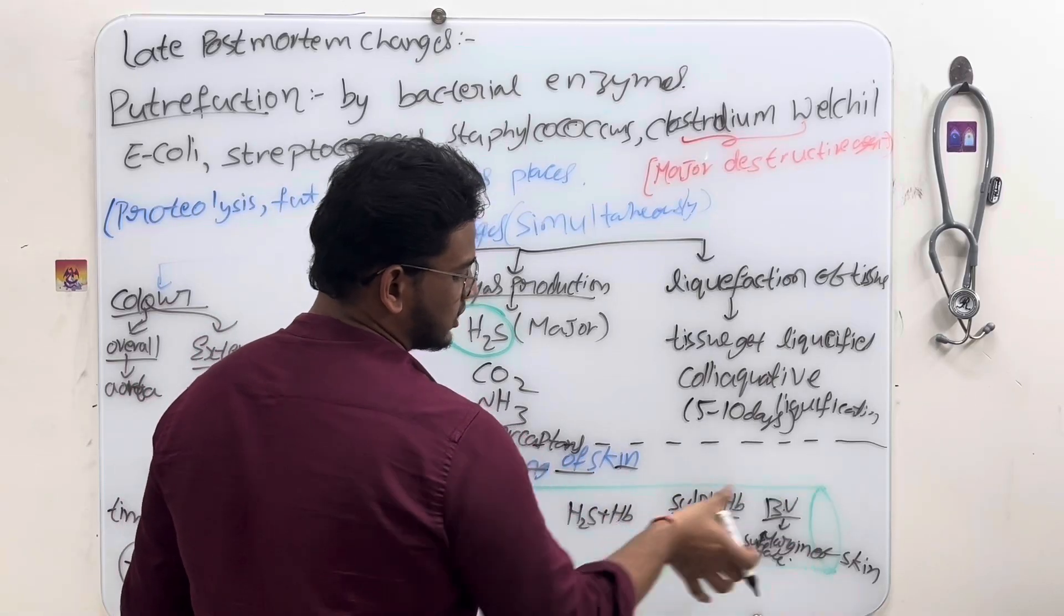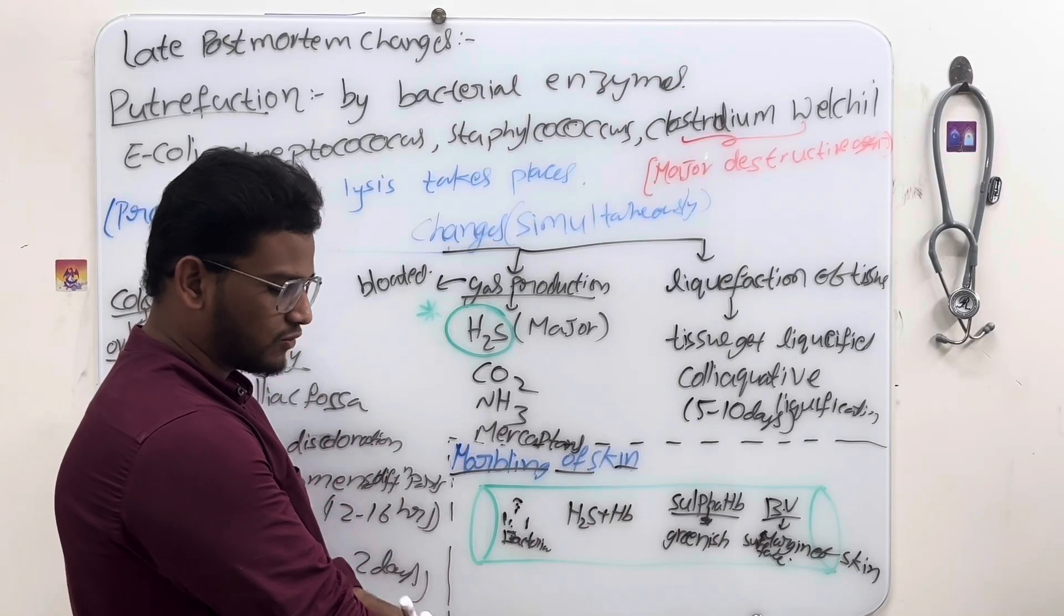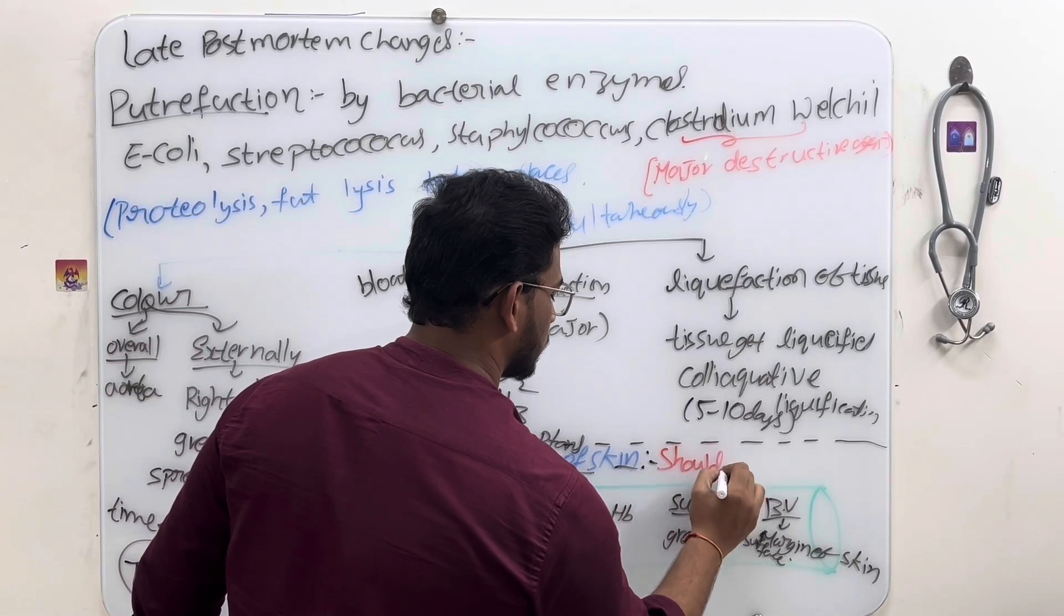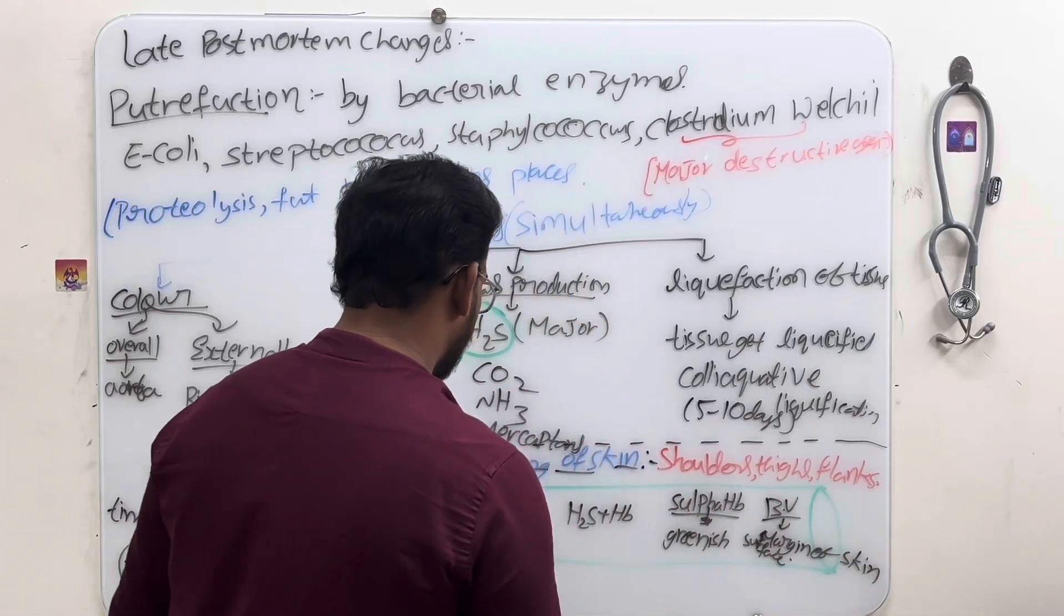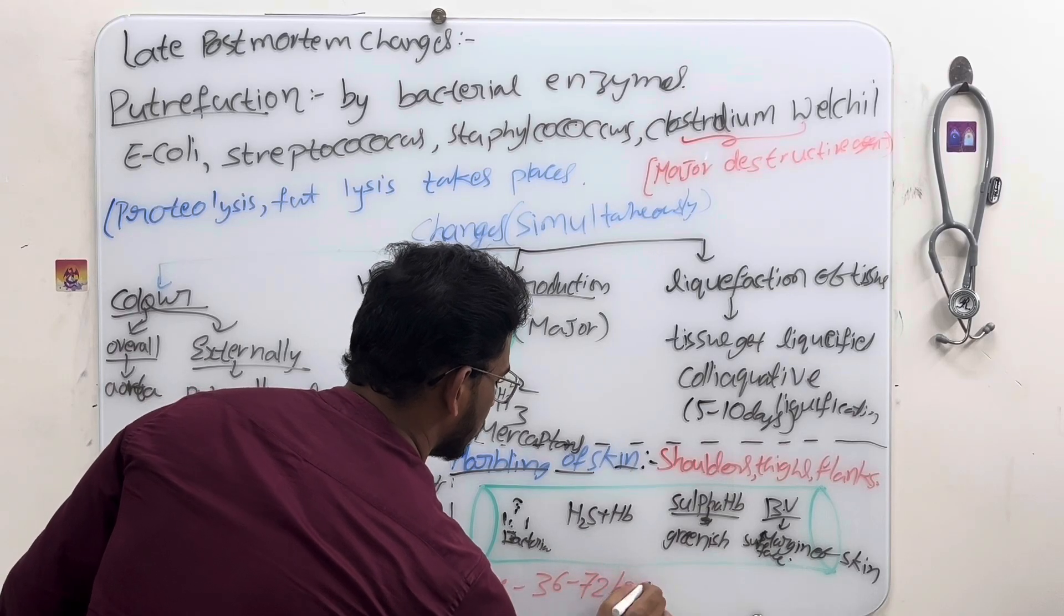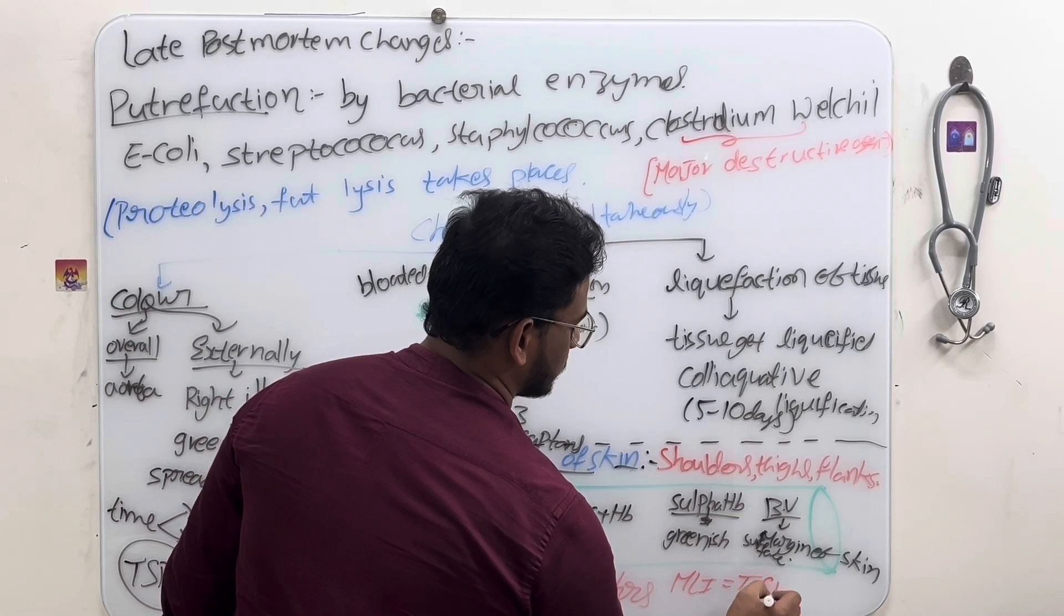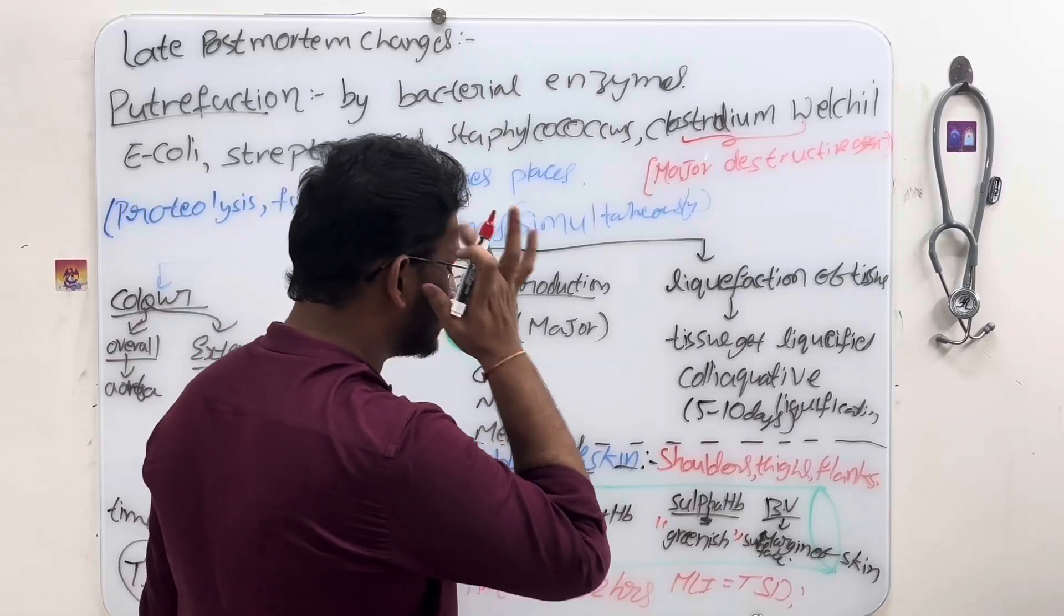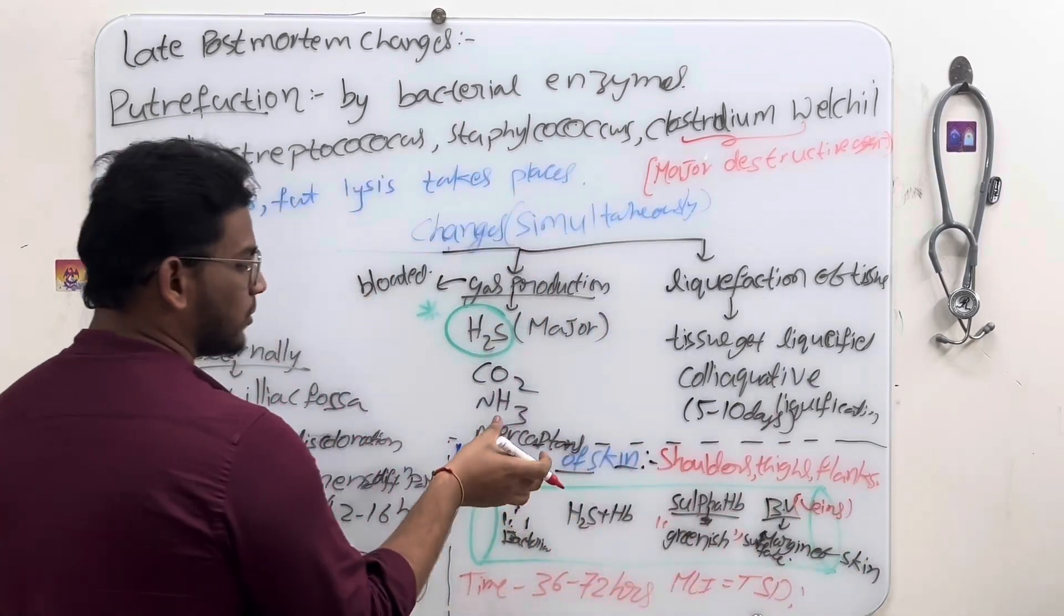Marbling of skin, we will get greenish discoloration in the venules in the part of surface margins of skin. Commonly we can see in shoulders, thighs, flanks, etc. Time is 36 to 72 hours. Medico-legal importance is we can find time since death. This is all about marbling of skin.